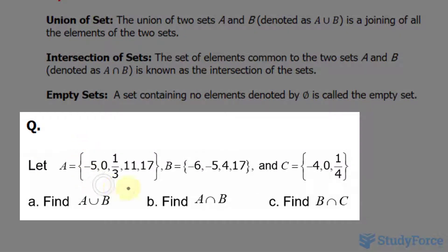The question reads, let A, which contains these five elements and B containing four elements, C containing three elements.